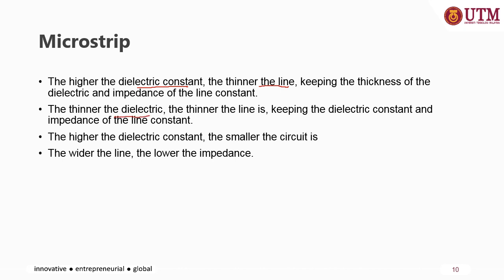The thinner the dielectric structure — you have the microstrip line backed with the ground plane — the thinner the line is, keeping the dielectric constant and impedance of the line constant. The wider the lines, the lower the impedance. We are going to look at the effect of those parameters in a later session.